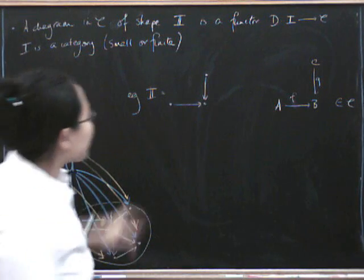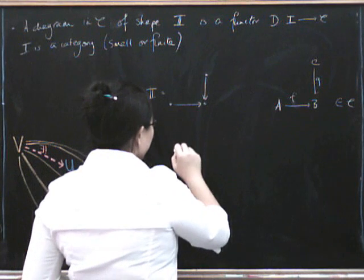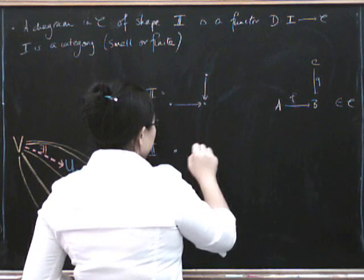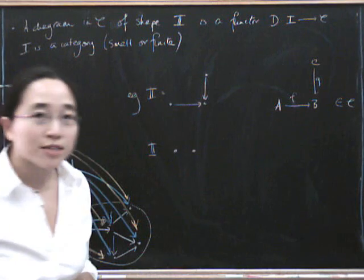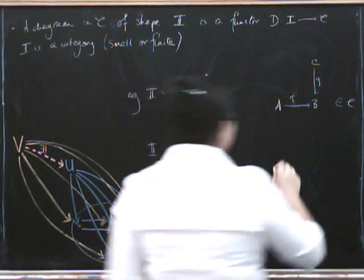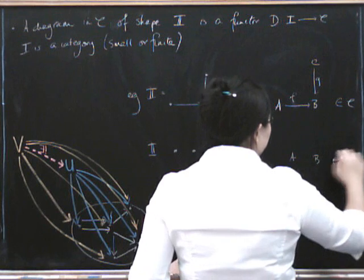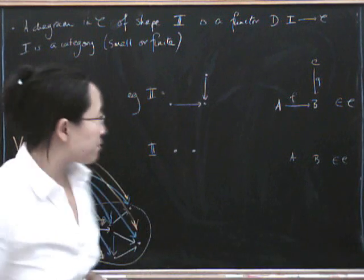So you can pick your shape category to be anything you want. If I is just a pair of objects with no morphisms between them, then what we get is a pair of objects in C. And a limit over that is going to be a product.